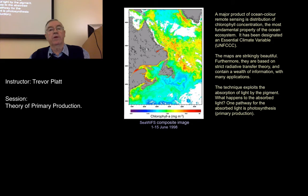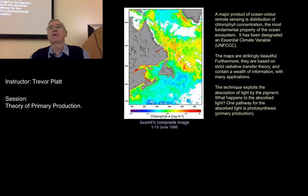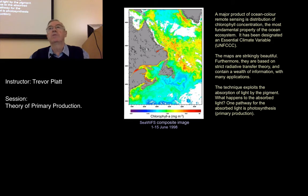When photons are absorbed into the ocean ecosystem, they can follow different pathways. One pathway is to make photosynthesis, but this is not the only one or even the most important — only around one percent or so of the photons going in are going into photosynthesis. Most of the rest are just going to be dissipated as heat. This is the pathway we're going to talk about today.